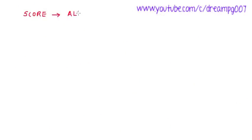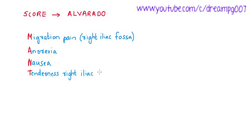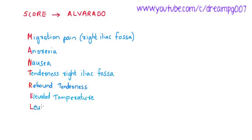Let's have a look at the scoring system used in appendicitis — it's called Alvarado's score. It includes migratory pain in the right iliac fossa, anorexia, nausea, tenderness in the right iliac fossa, rebound tenderness, elevated temperature, fever, leukocytosis greater than 10,000, and shift of the neutrophils to the left.